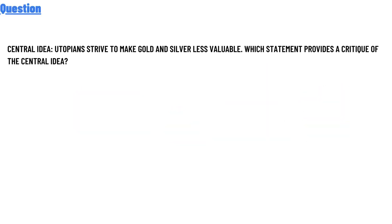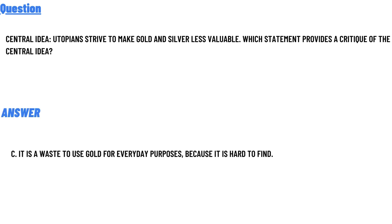Our today's question is about the central idea: why do people paint stripes to make gold and silver less valuable? Which of the statements provides a clue to the central idea? The correct answer is option C — it is a waste to use gold for everyday purposes because it is hard to find.